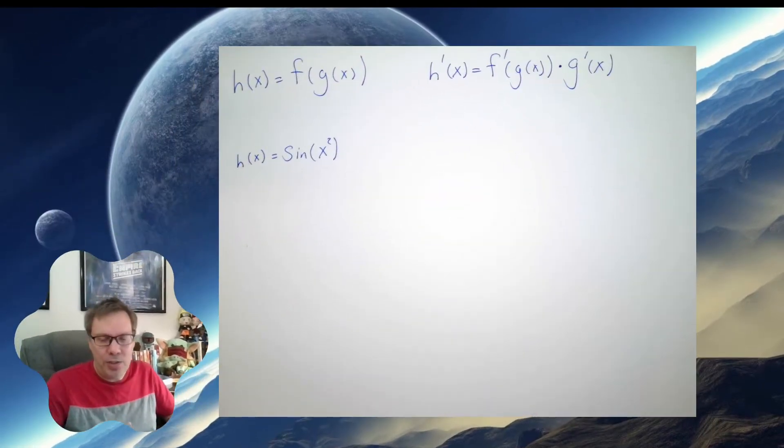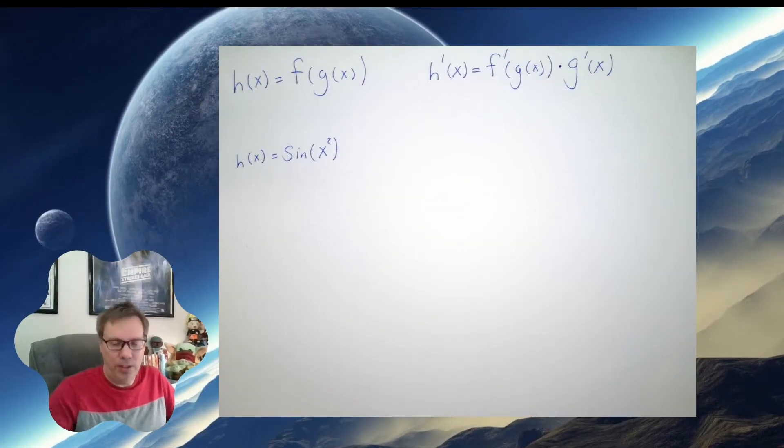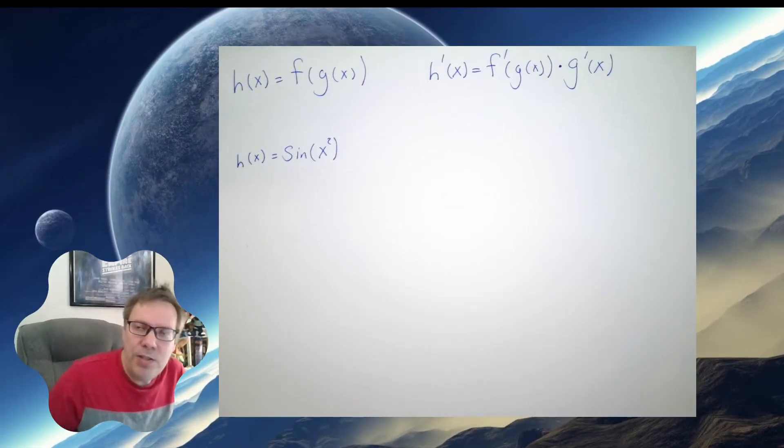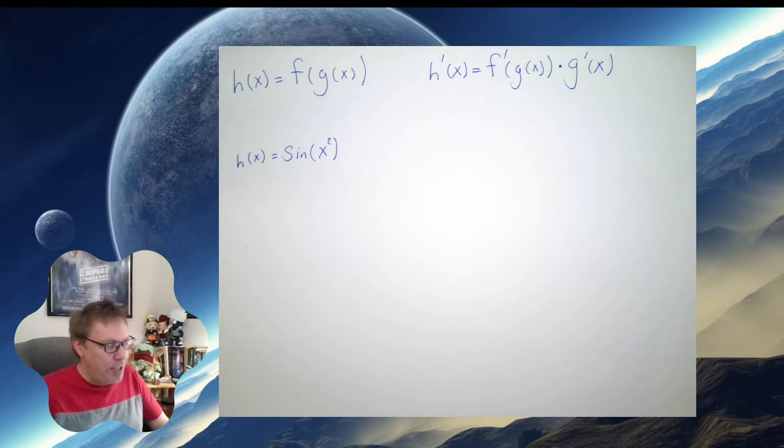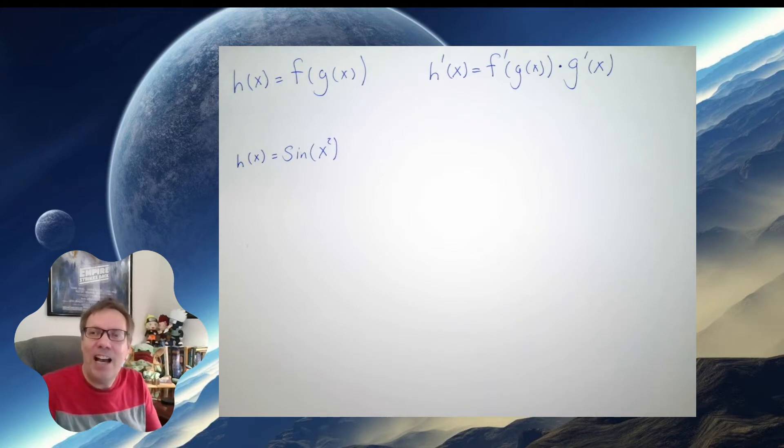So in order to talk about the chain rule, we need to talk about the composition of functions. Composition of functions is when one function is inside the other. Like, for example, h of x defined here in the paper. It's f composed with g. In other words, g of x is inside the function f of x.